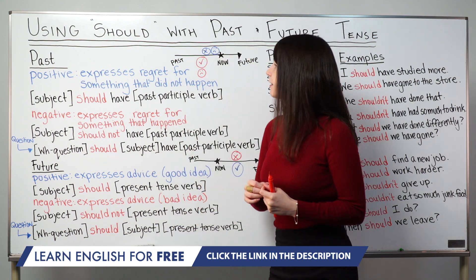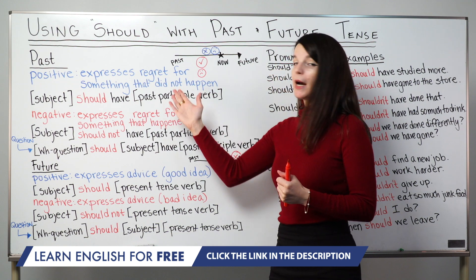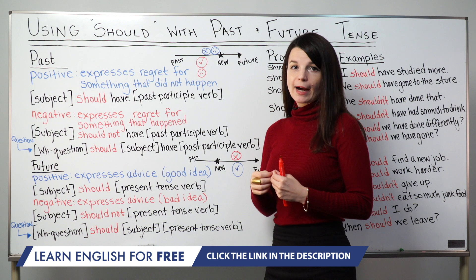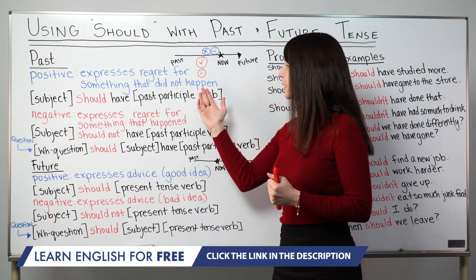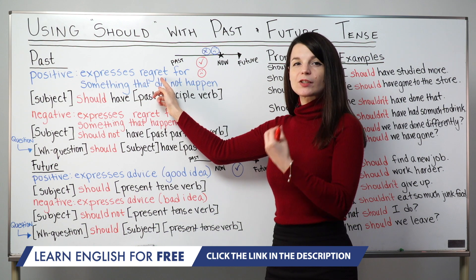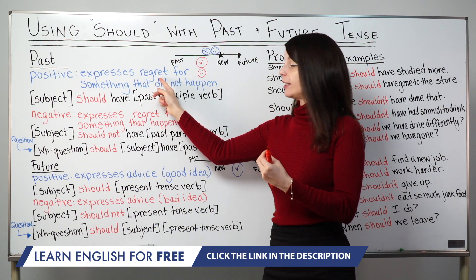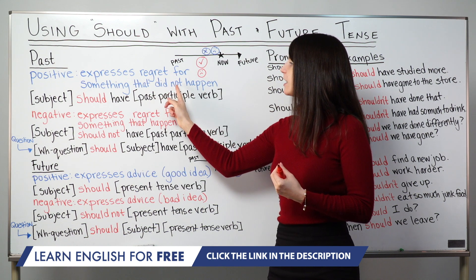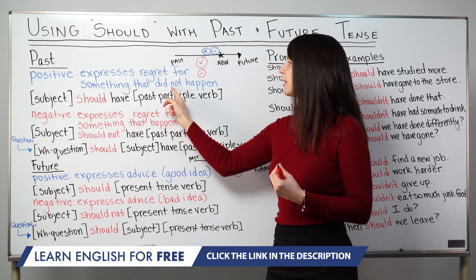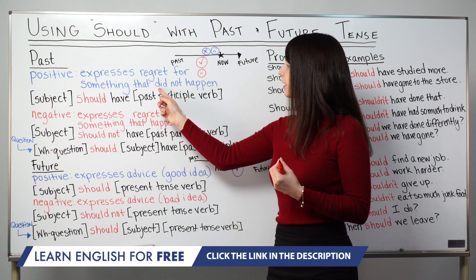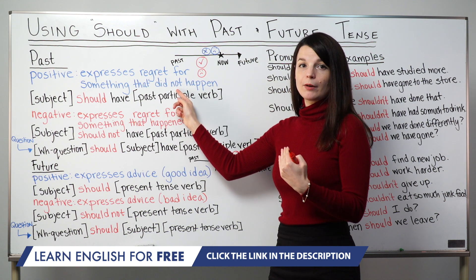I want to start this lesson by talking about the past tense version. When we use should in the past, in a positive statement, we do it to express regret. Regret means a sorry feeling or a sad feeling. It expresses regret for something that did not happen — a key point. It's a positive statement, but we're talking about something that did not happen, and we feel sad about it.